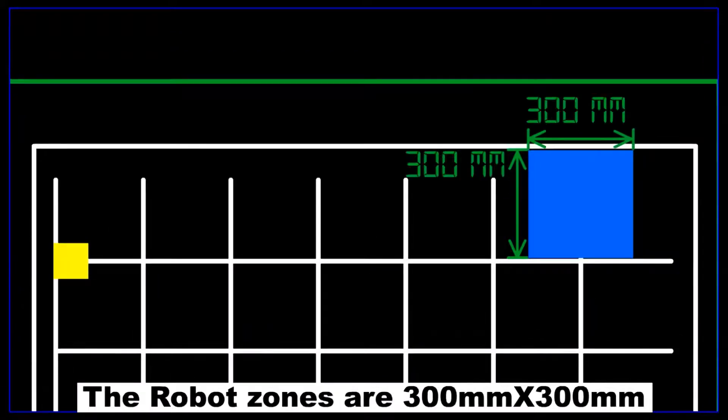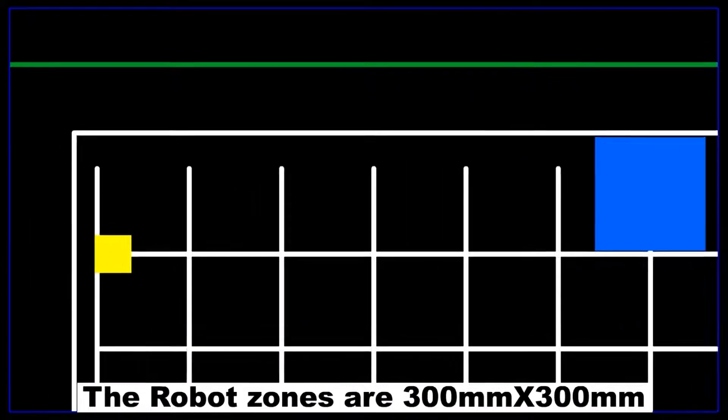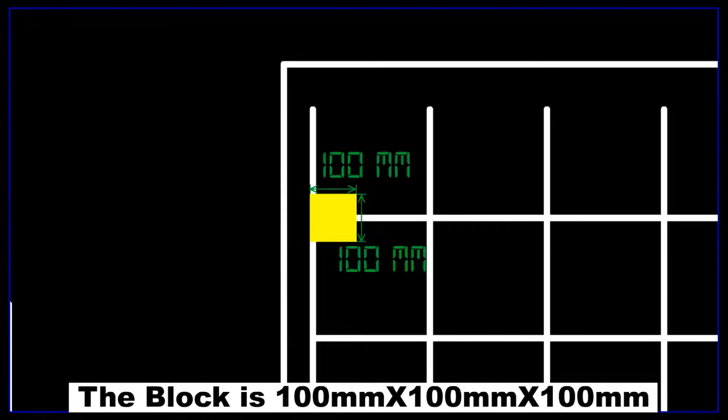The robot zones are 300 mm by 300 mm. The block dimensions are 100 mm by 100 mm by 100 mm.